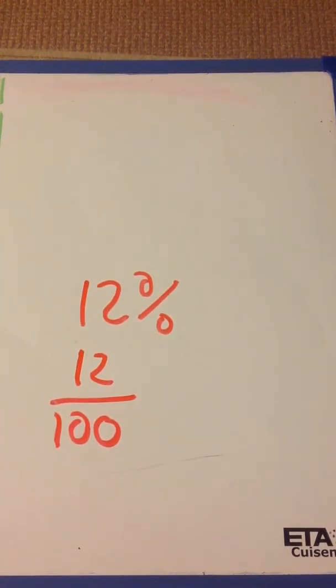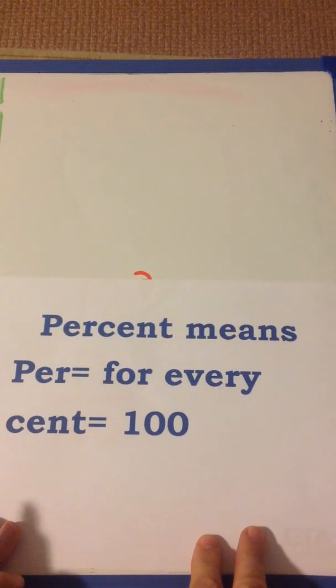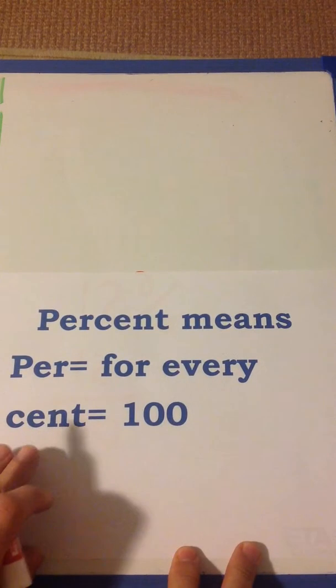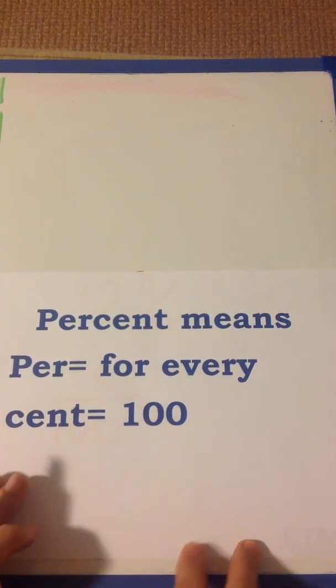And we also know that fractions are decimals. Percent means per. It means for every in Latin. And cent means 100. So for every 100. That's why we're doing it that way.